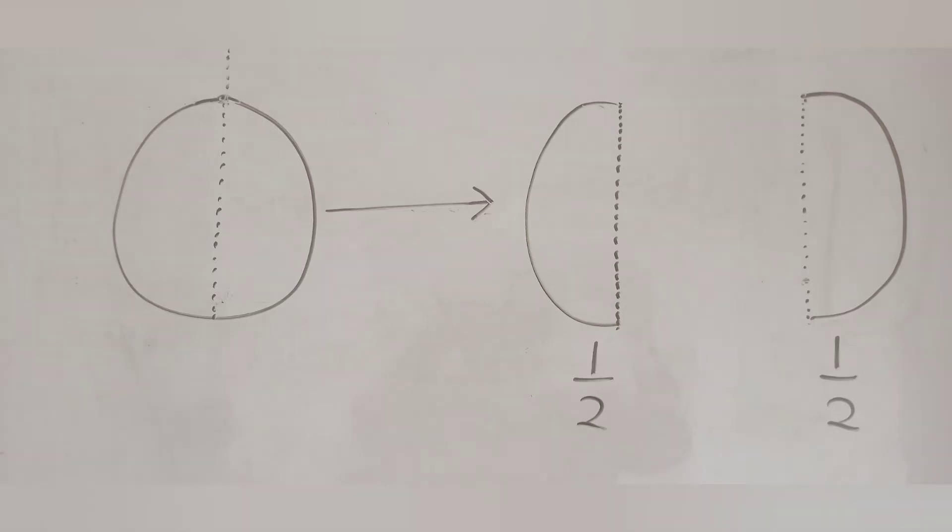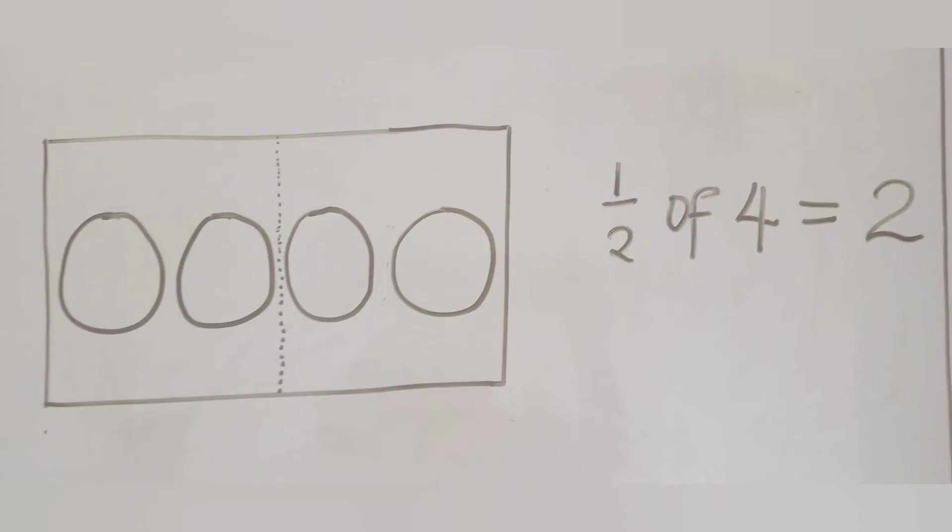Now, how do we write half? Half is written as 1 over 2. Half of 4 is 2. How do I know that?